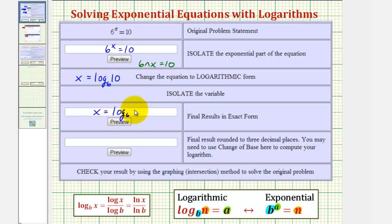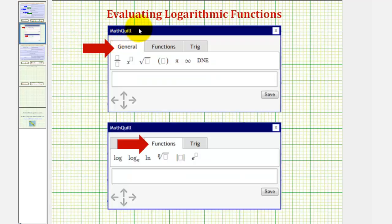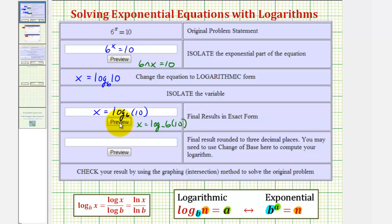And again, there are two ways to enter this. We can enter x = log underscore 6 for the base, then in parentheses 10. Or probably the easier way would be to click on the answer cell, click on the yellow arrow which brings up this math tool, click on the functions tab and use this option here, change the base to 6, enter the equation, click save. And it's always a good idea to use the preview key to make sure you've entered everything correctly.